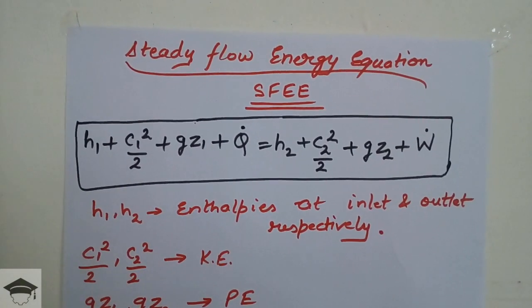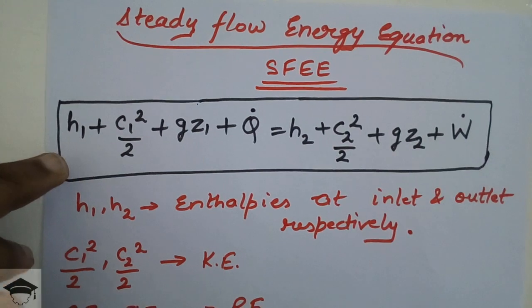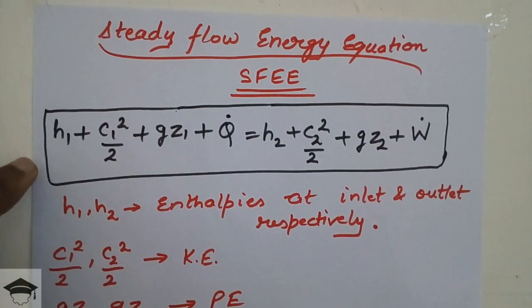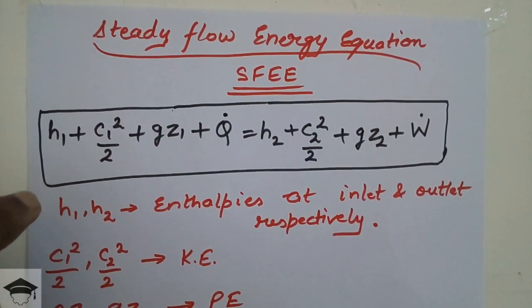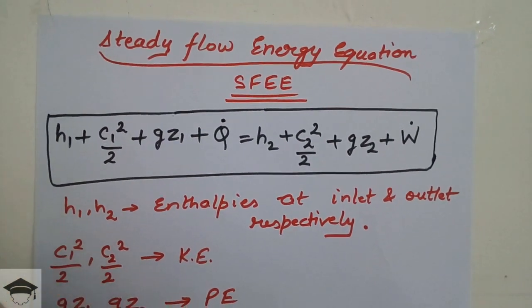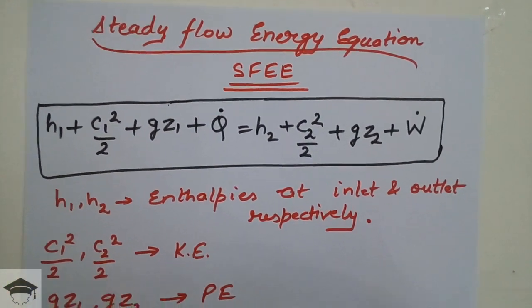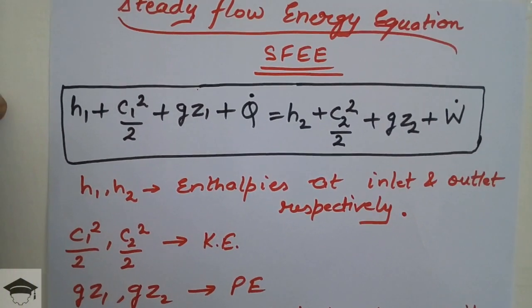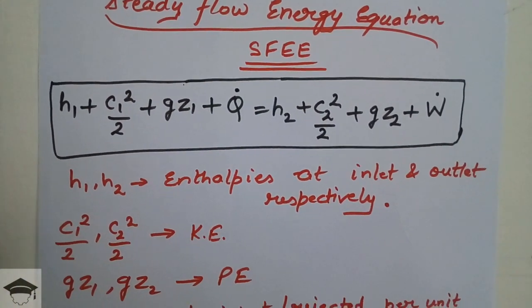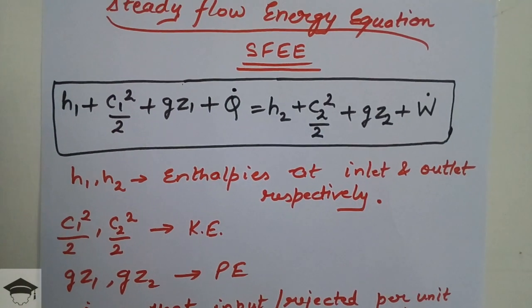The steady flow energy equation is: h1 plus c1² / 2 plus gz1 plus Q̇ equals h2 plus c2² / 2 plus gz2 plus Ẇ.